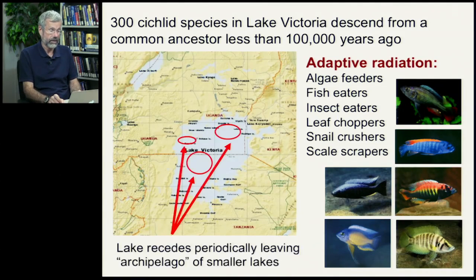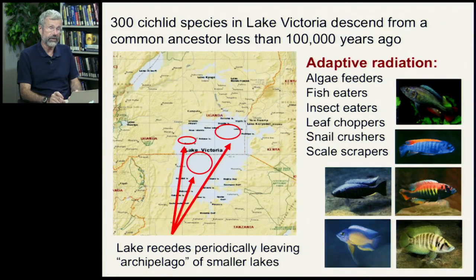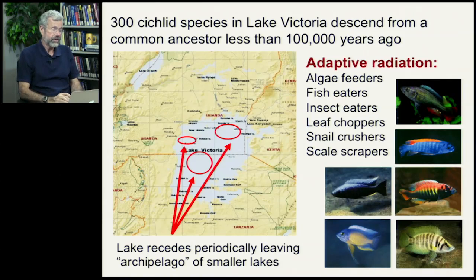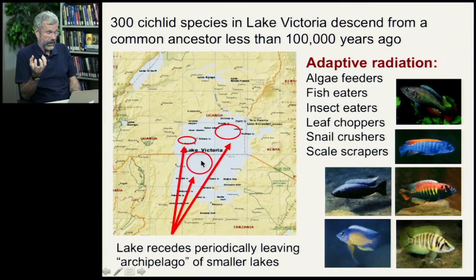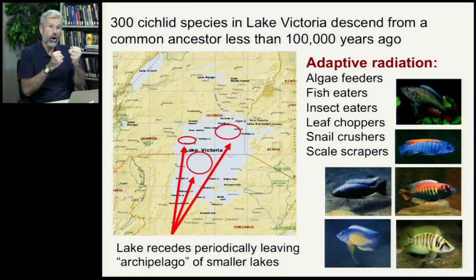This is a fantastic rate of speciation. Although Lake Victoria looks like one big continuous ecosystem today, that's only true while the lake is at relatively high levels. Over the last few tens of thousands of years, the lake level has periodically dropped very low, physically separating the lake into an archipelago of smaller lakes. These fish become reproductively isolated, may find themselves in different combinations of other species, and this leads to very rapid speciation.